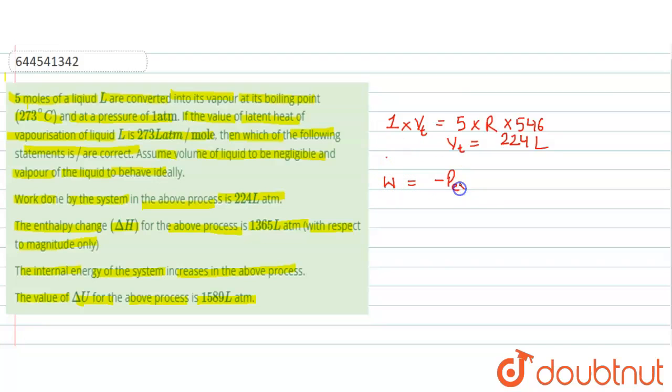And the work done is given by minus P external into delta V. So here P external is minus 1 atmosphere and volume is 224 liters, so it will come out as minus 224 liters atmosphere. It's negative because work is done by the system.